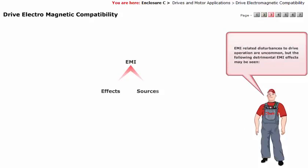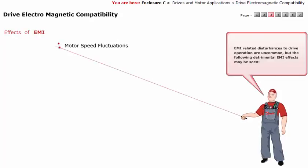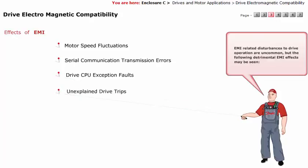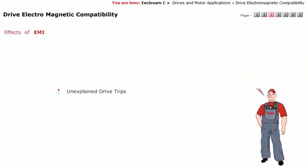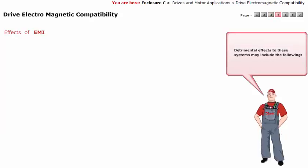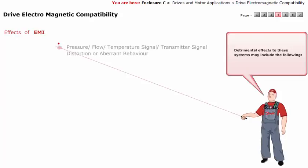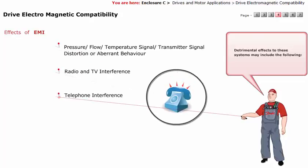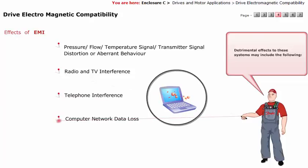EMI-related disturbances to drive operation are uncommon, but the following detrimental EMI effects may be seen: motor speed fluctuations, serial communication transmission errors, drive CPU exception faults, and unexplained drive trips. Detrimental effects to other systems may include pressure, flow, and temperature signal transmitter distortion, radio and TV interference, telephone interference, computer network data loss, and digital control system faults.